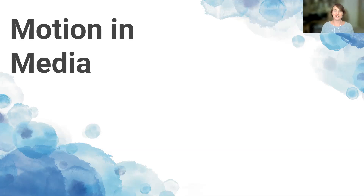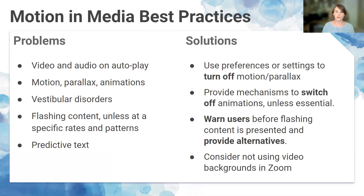Moving on to motion and media: many of us want to use animations and parallax to increase engagement since we're all competing for attention. Accessibility is broader than we might think — there are more ways to make a site accessible than just screen reader compatibility. If navigating a site to find specific information is a struggle, users will move on to the next site. Consider the following solutions to common problems with motion and media.